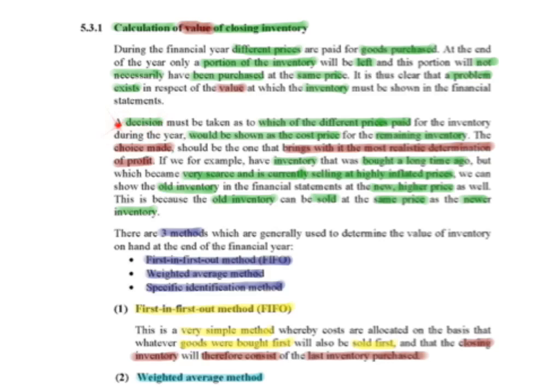So a decision must be taken as to which of the different prices paid for the inventory during the year would be shown as the cost price for the remaining inventory. This is a choice that needs to be made and should be the one that brings the most realistic determination of profits.